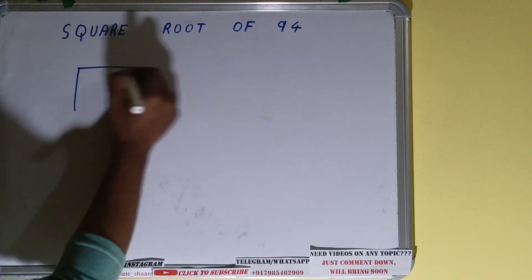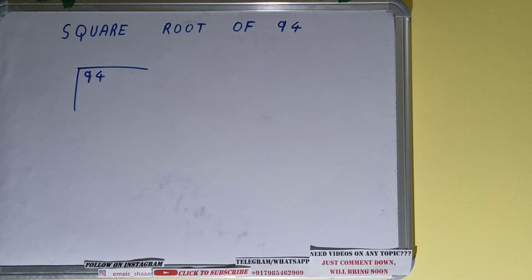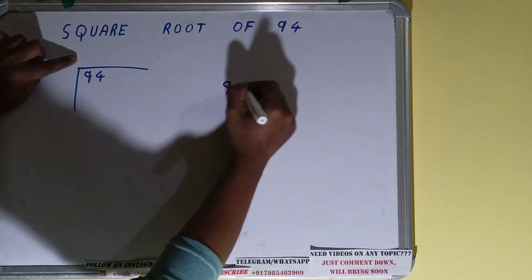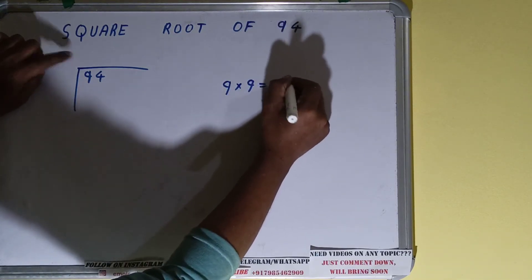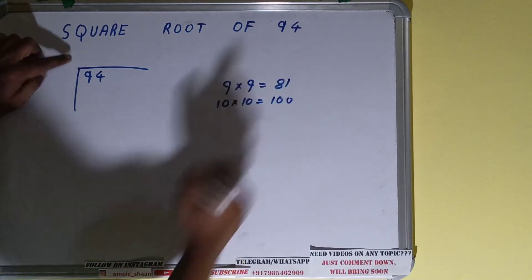So first we need to write like this, and the rule is whatever divisor we take here we have to take it as quotient also. If we take 9 here we have to take 9 here also, it will be 81. If we take 10 here we have to take 10 here also, it will be 100. So we cannot take 10 because 100 is greater than 94.